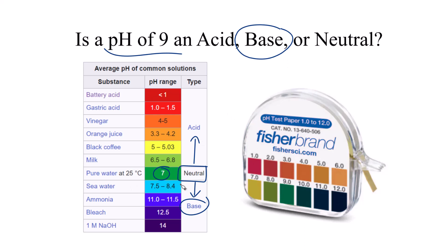So seawater, that's getting close to 9. Ammonia, that's above 9. So pH of 9 isn't really concentrated, but it's still a base.